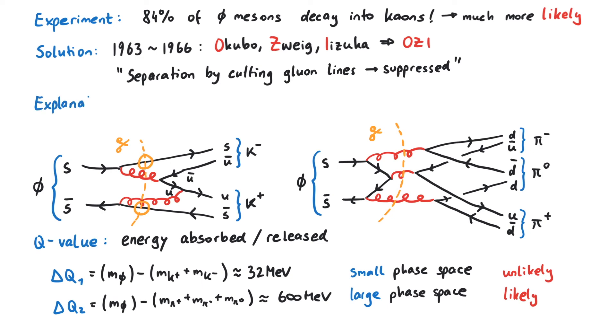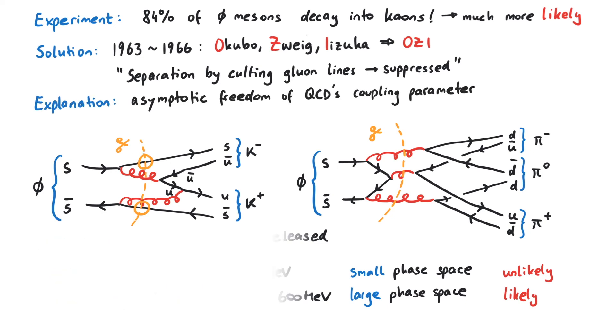The explanation of the OZI rule lies in the asymptotic freedom of QCD's coupling parameter. In the case of the pions, the gluons must have a very large energy, since they alone are responsible for the hadrons in the final state. In the left diagram, you can see that the strange contributions to the kaons travel all the way from the initial state. Therefore, the gluons do not have to bring such a high energy with them.